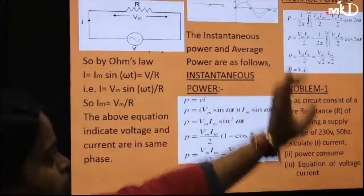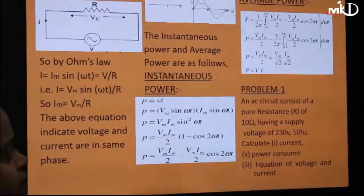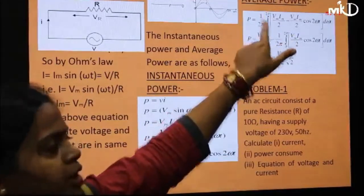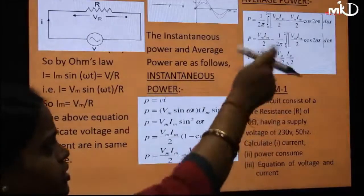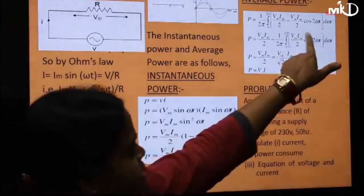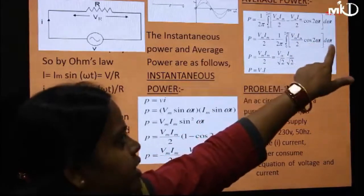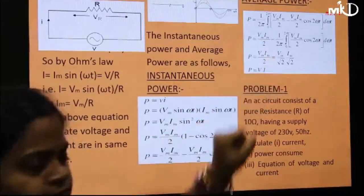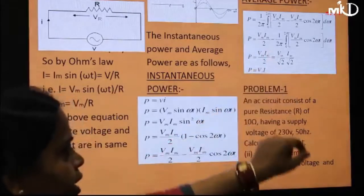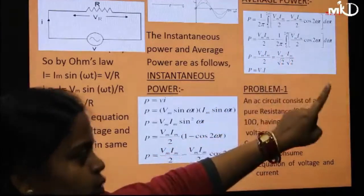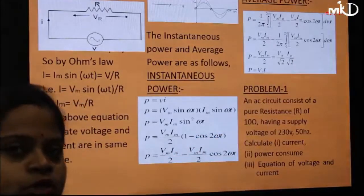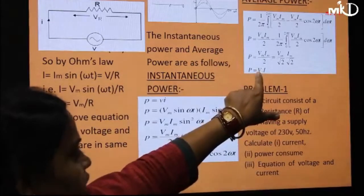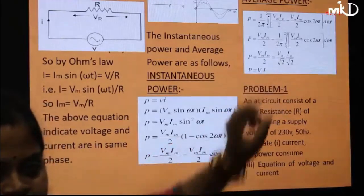For average power, we take the integral over a complete cycle from 0 to 2π, multiplied by 1/(2π), integrating with d(ωt). The cosine term integrates to 0, so the average power is P = Vm Im/2. Writing Vm/√2 = Vrms and Im/√2 = Irms, we get P = Vrms × Irms, or simply V × I in the resistive case.